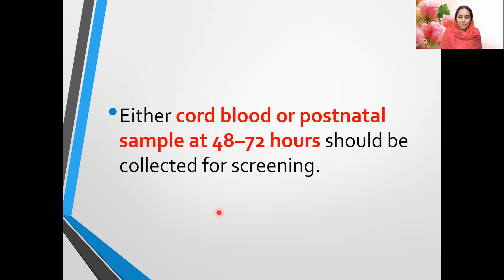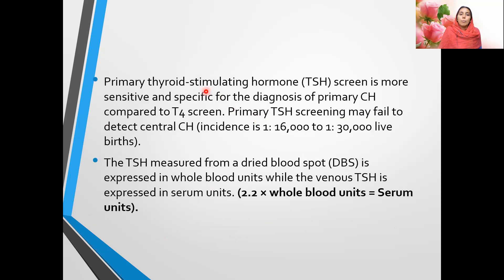Sampling should be done from cord blood, or a postnatal sample can be done at 48 to 72 hours for screening. Second screening should be done in preterm neonates less than 37 weeks, low birth weight or very low birth weight neonates, ill and preterm neonates admitted to NICUs, babies whose specimen was collected within half an hour to 24 hours of life, or in case of multiple births, especially same-sex twins. The repeat specimen should be collected after two weeks of age or two weeks after the first screening test.